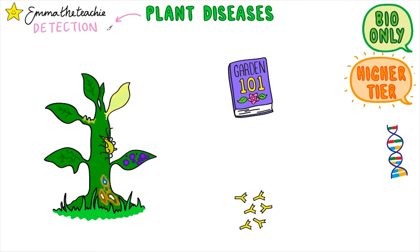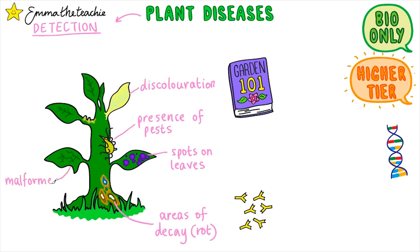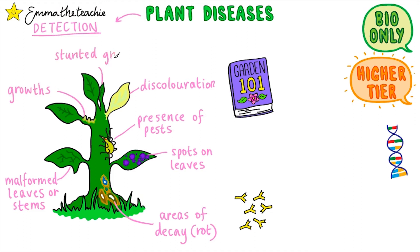You need to know how plant diseases can be detected. Pause the video and see how many you can spot in the picture below. There are seven indicators of disease: discoloration, presence of pests, spots on leaves like rose black spot, areas of decay or rot, malformed leaves or stems, abnormal growth, and finally stunted growth. So there are seven to memorize.